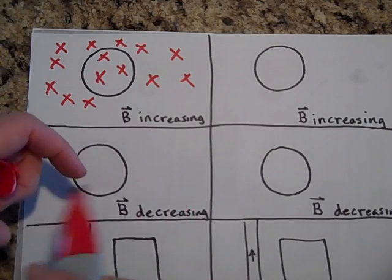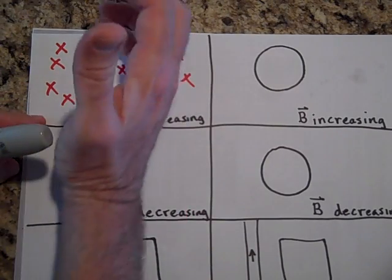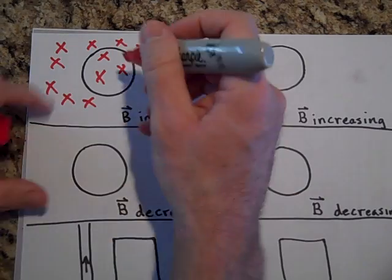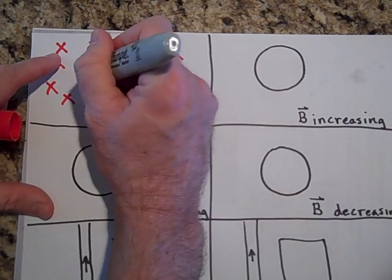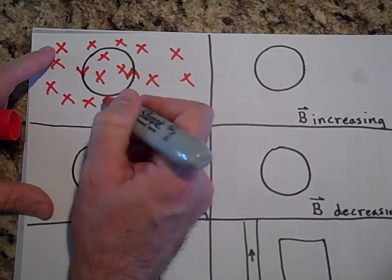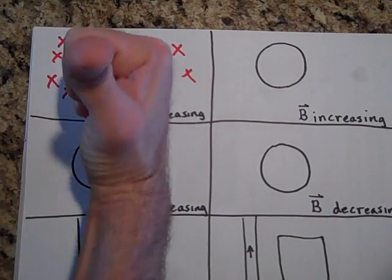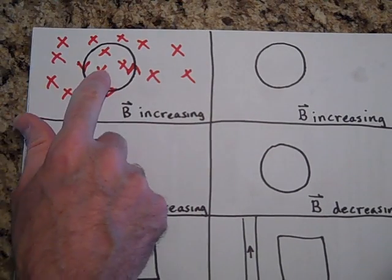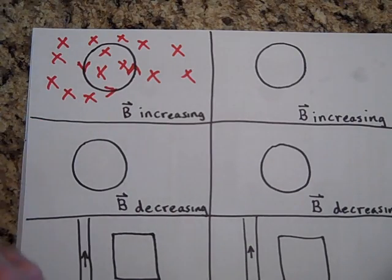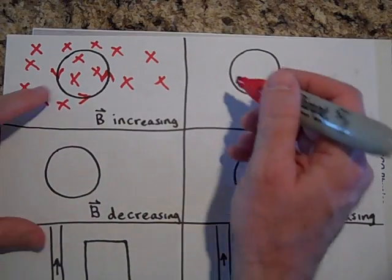It's going to try to make its own field pointing out. To make a field pointing out, the current is going to go this way — that's the direction of current that gives you a field pointing out, which tries to slow this field from increasing.